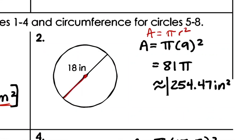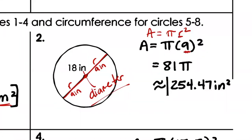Number two: they give us the diameter, but for area we need the radius. If the diameter is 18 inches, the radius is half of that — 9 inches. So substitute r = 9: Area = π × 9² = π × 81 = 81π. Punch into the calculator: 81 × 3.14 ≈ 254.47 inches squared. Don't forget inches × inches equals inches squared.